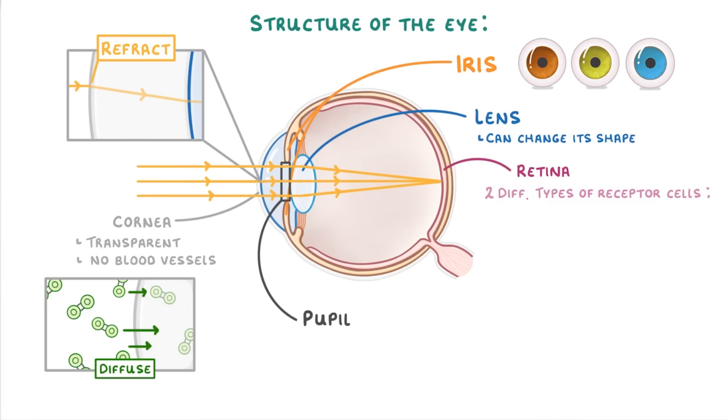The retina itself is made up of two different types of receptor cells. Cone cells are sensitive to the color of light and so allow us to see in color.